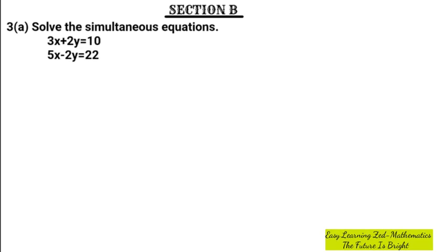Okay, so question number 3A was as follows: solve the simultaneous equation. The simultaneous equation is the one below here, which is 3x plus 2y equals 10, 5x minus 2y equals 22.